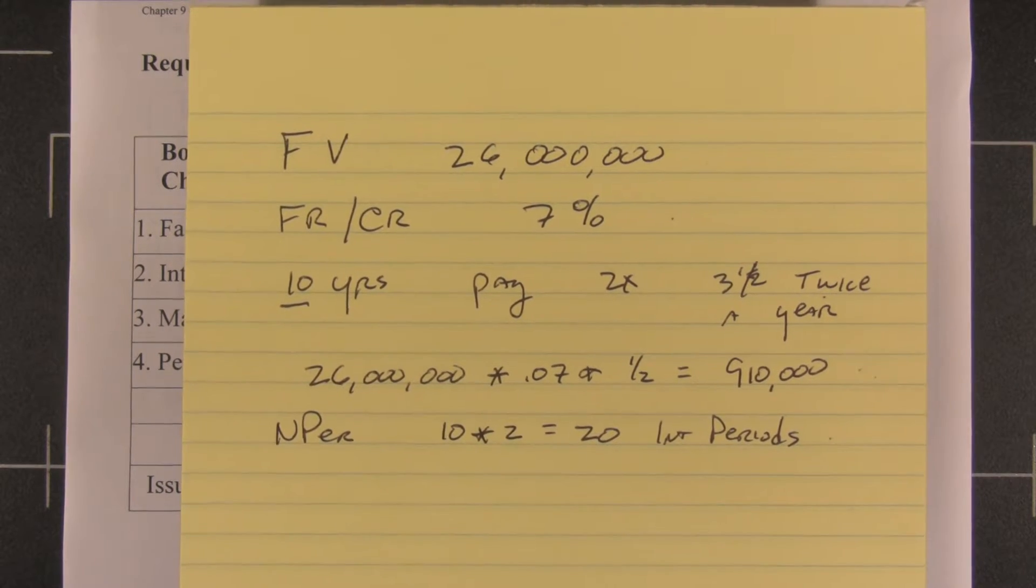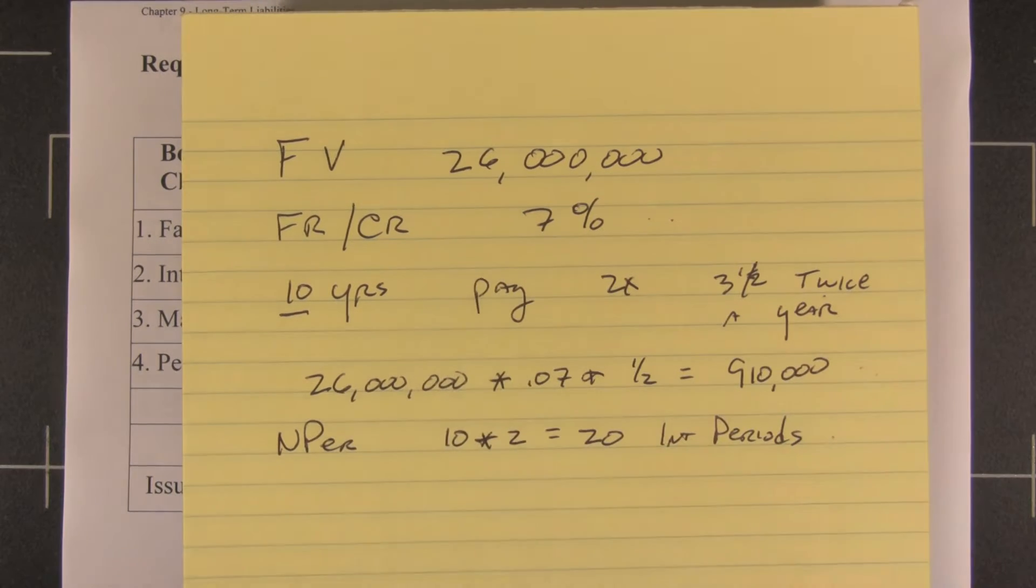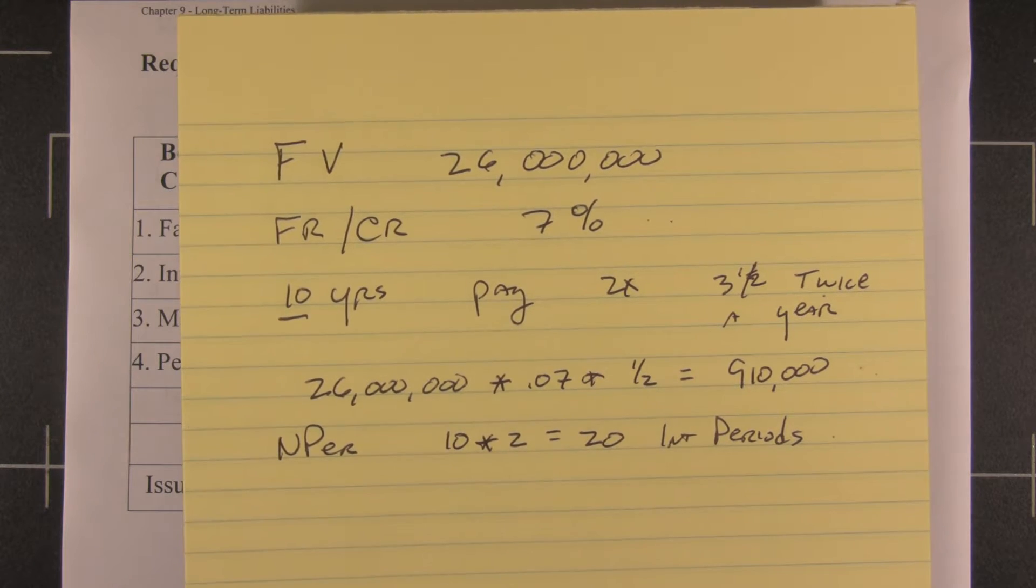Okay, 9-6, part 2. Now we have our 7% bond selling in a 7% market. So the bond rate and the market rate match exactly.